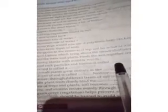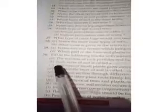B. Each layer of soil is called a horizon. C. The roots of small plants grow entirely in topsoil.